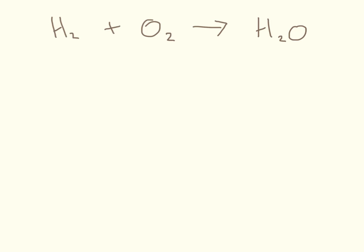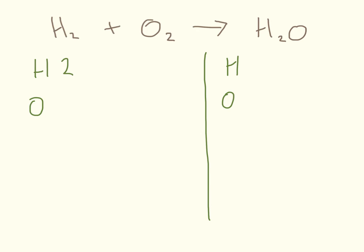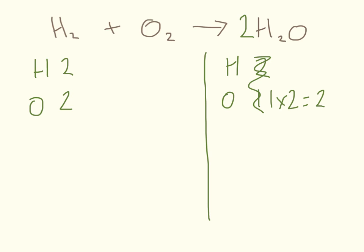Here is an actual equation you might get given in the exam, and we treat it in exactly the same way. I'm going to draw a line down the middle and list what I've got: hydrogen and oxygen. The small subscript number tells us how many we've got — so I have two hydrogens and two oxygens on the left. On the right I have two hydrogens, but there's no number after the oxygen so I have one oxygen. My oxygens aren't balanced, so the first thing I'm going to do is pop a two in front of water: two times one gives two oxygens, so my oxygens are now balanced.